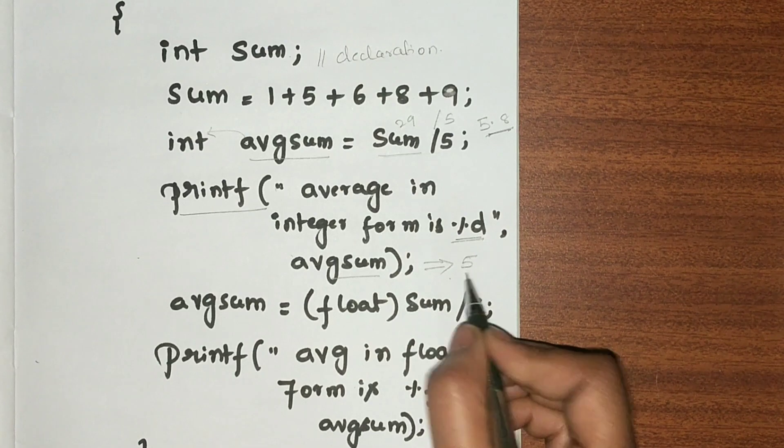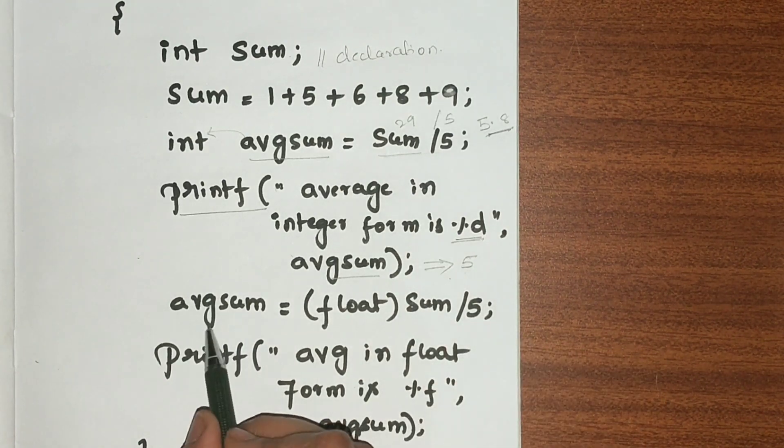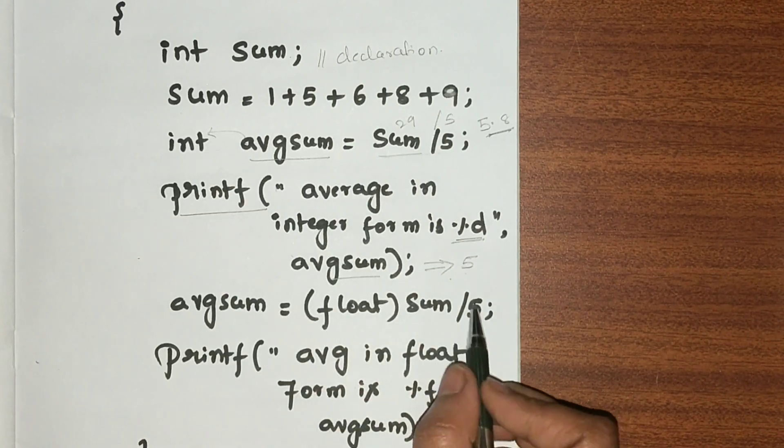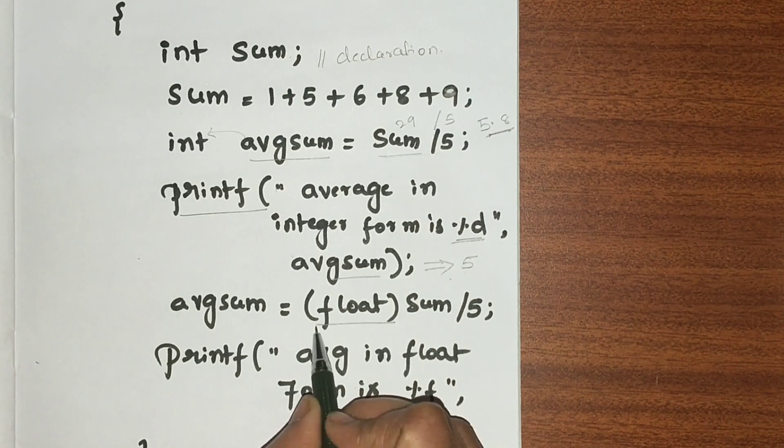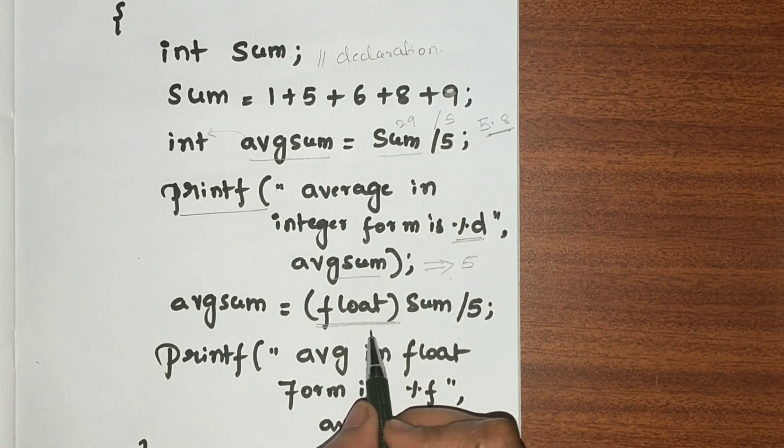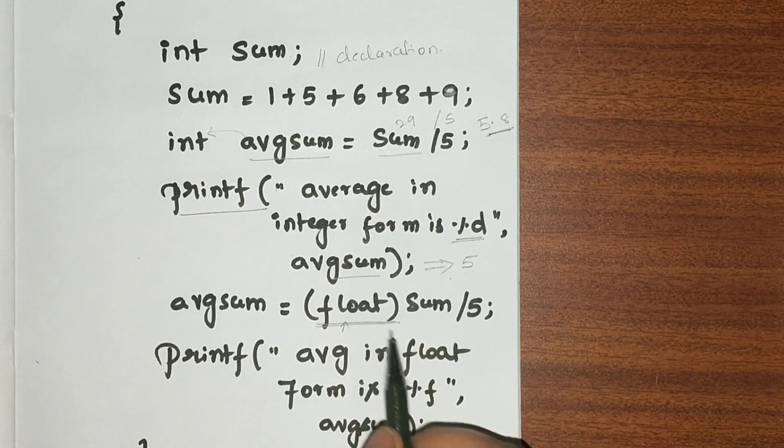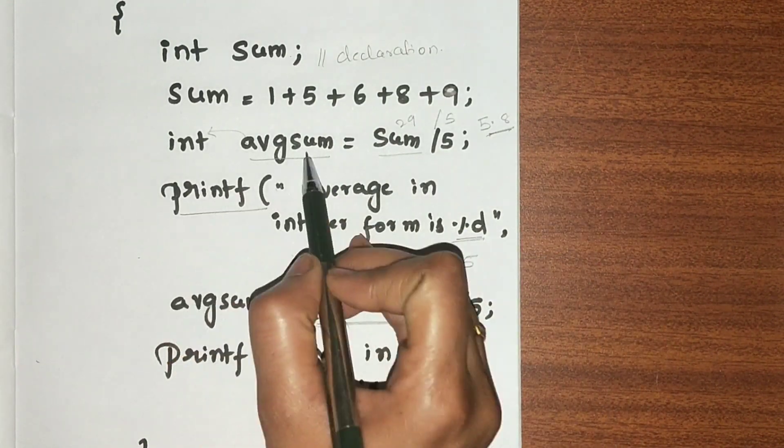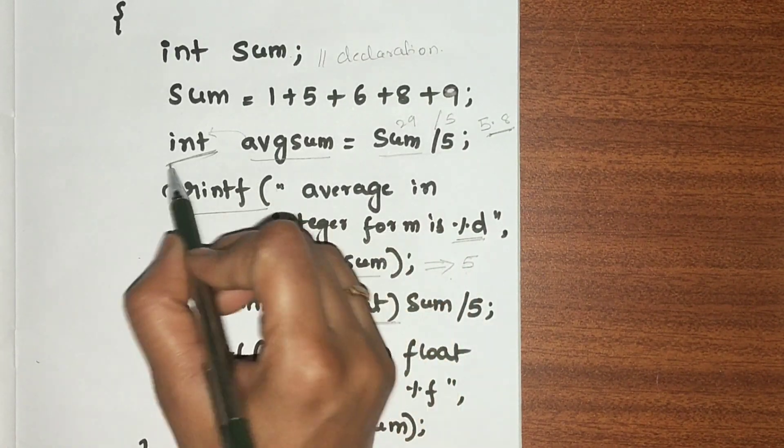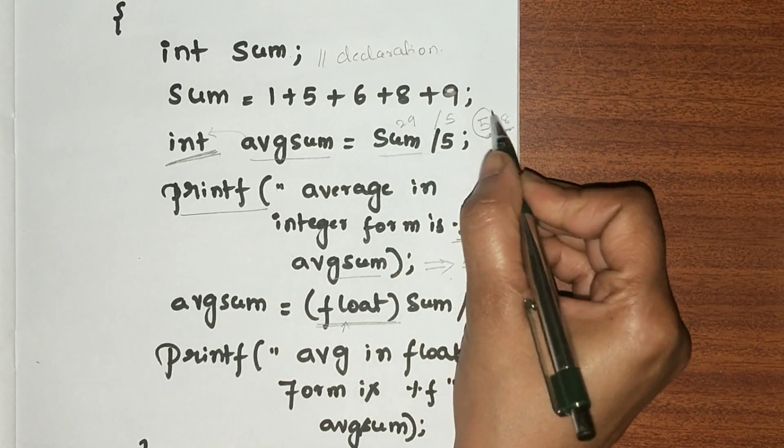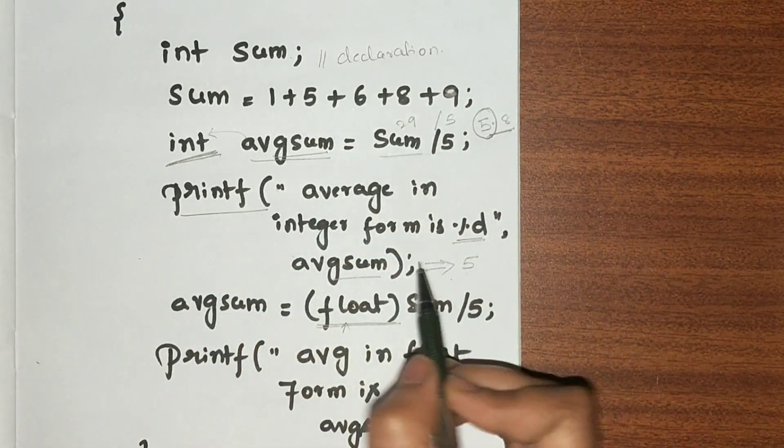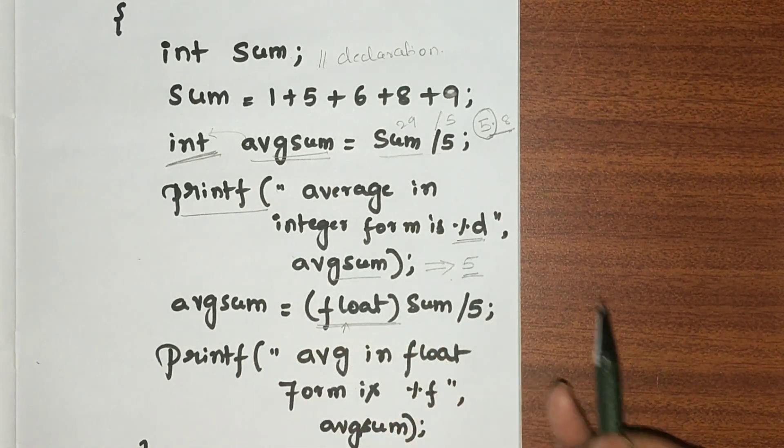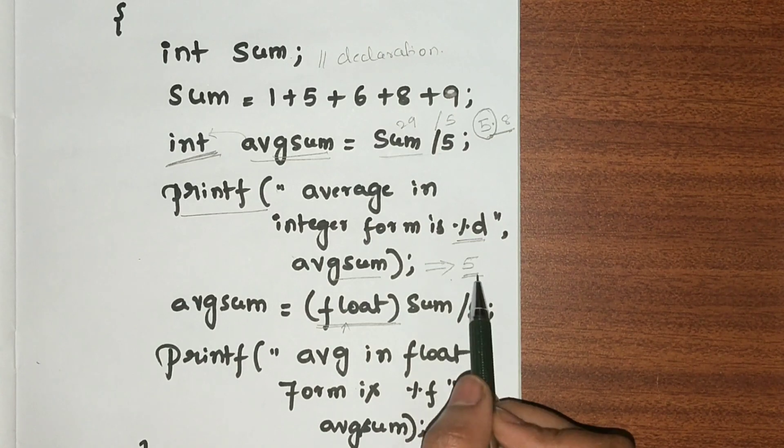Next, avgsum = (float)sum / 5. Here we are trying to convert the sum into a floating value. You can observe that int avgsum is of type integer, so instead of 5.8, only 5 will be stored in avgsum. Suppose I want to convert that to floating point value, then I should explicitly specify in brackets: avgsum = (float)sum / 5. In this case, it will store the full value 5.8.